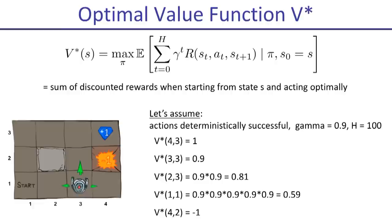If you're at the (2,3) state and you're using a deterministic policy, the optimal policy will say move up — you'll be guaranteed to move up. Then the optimal policy will say move to the right. That takes two time steps, and then you can take your exit to get the reward: 0.9 times 0.9 times the reward of one.